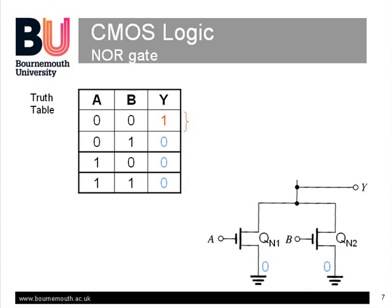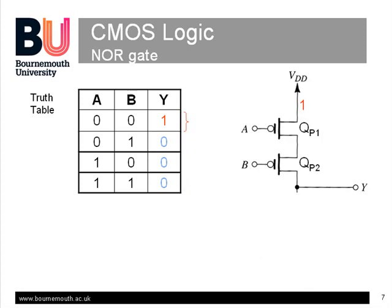Looking next at the ones with the pull-up circuit. QP1 and QP2 are PMOS pull-up transistors. For the output to be connected to 1, both A must be 0 to turn on QP1, and B must be 0 to turn on QP2. Hence we have the required function that both A and B have to be 0 for the output to be 1. Notice also that the pull-up and pull-down networks are complementary.